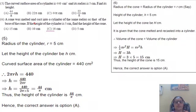A cone was melted and cast into a cylinder of the same radius as that of the base of the cone. If height of the cylinder is 5 centimetre, find the height of the cone. So, radius of the cone same as radius of cylinder that is r. Height of the cylinder is h which is 5. Height of cone is capital H. See the difference.